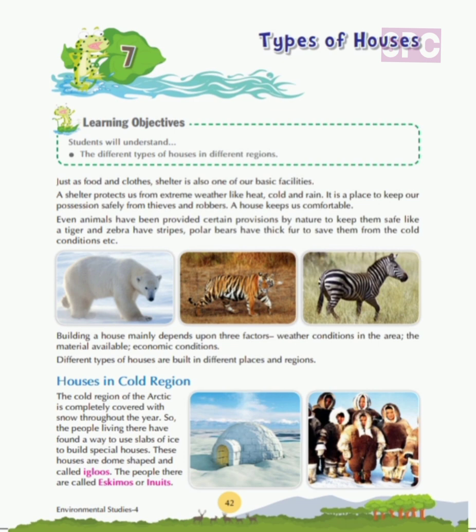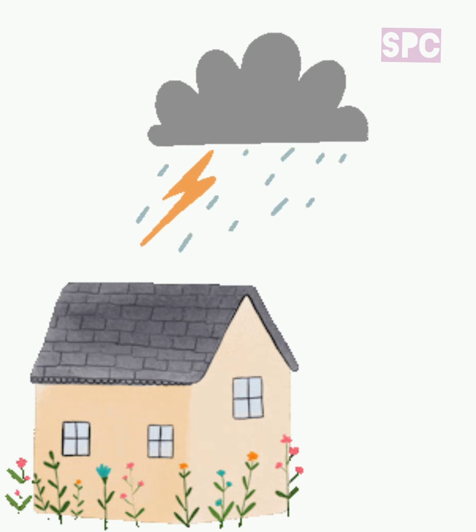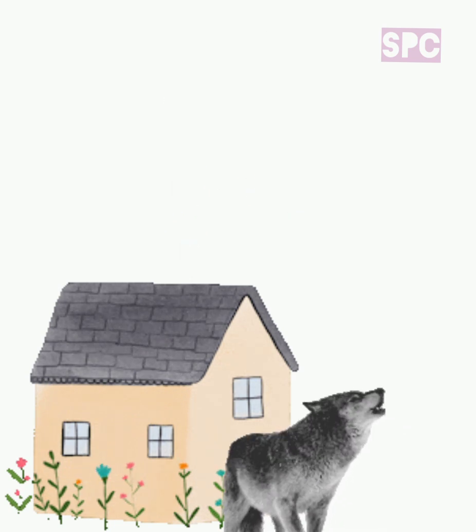Just as food and clothes, shelter is also one of our basic facilities. A shelter protects us from extreme weather like heat, cold and rain. It is a place to keep our possessions safely from thieves and robbers. A house keeps us comfortable and keeps us safe from harsh weather conditions, wild animals and thieves.